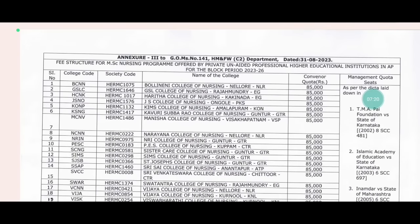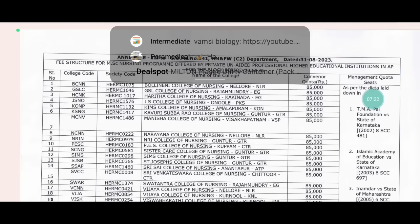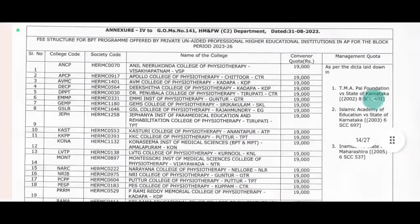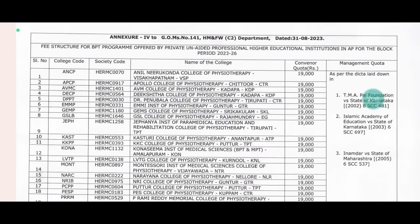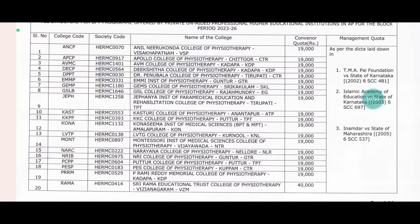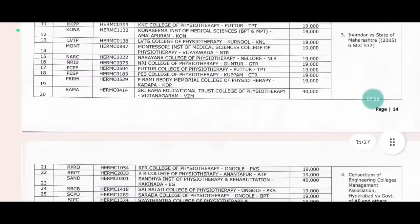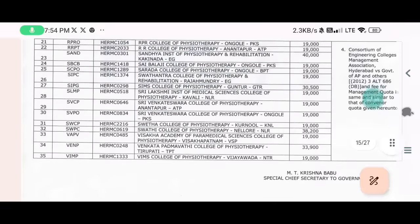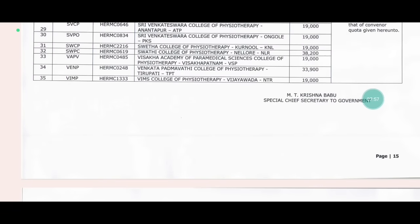This is a little bit different — this is a nursing college. This is the 95th grade. This PDF is also available in the Telegram channel. Check it out. So, you have a college and a category of college. This is almost 20 years old. You can check this out.